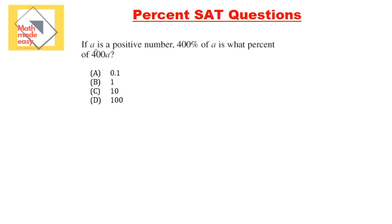The first concept of problem solving common in the SAT is percent. Let's look at our first question: if A is a positive number, 400% of A is what percent of 400A? This looks confusing, but if you break it down it will look much better. 400% means 400 over 100, which is 4. So 400% of A means 4A.